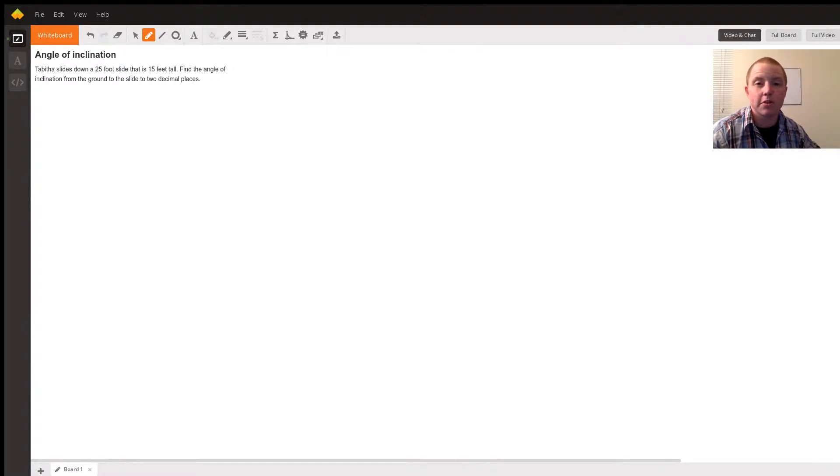Today we will be talking about angle of inclination. The question says Tabitha slides down a 25-foot slide that is 15 feet tall. Find the angle of inclination from the ground to the slide to two decimal places.